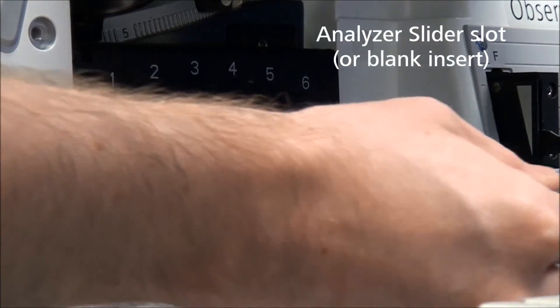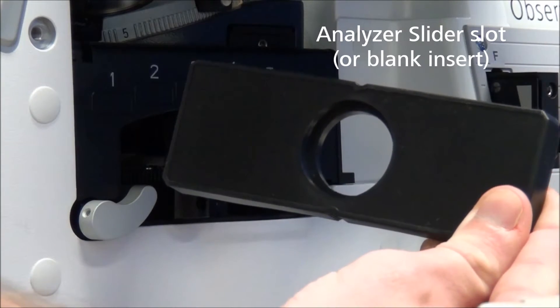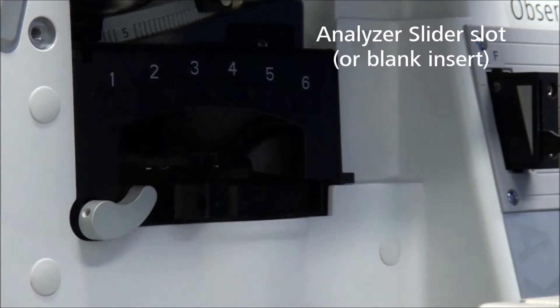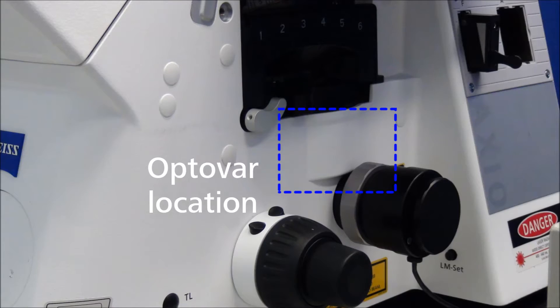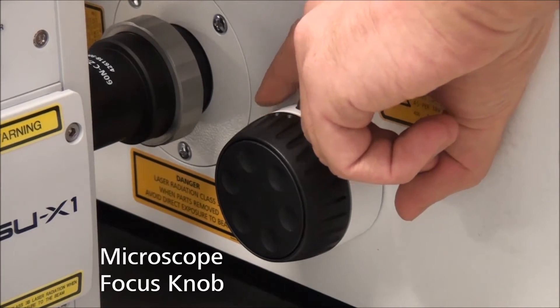If an analyzer slider is installed beneath the reflector turret, slide it to the open position or remove it completely. Set the OPTIVAR to 1x via the roll wheel under the reflector turret or via the touch screen or central button on the focus knob.